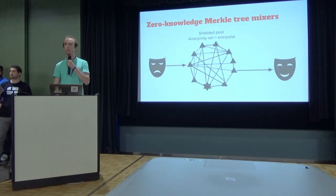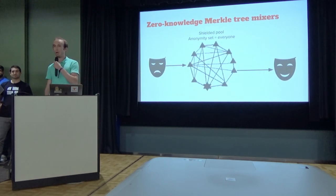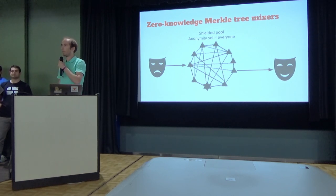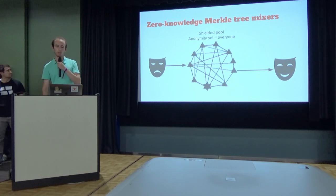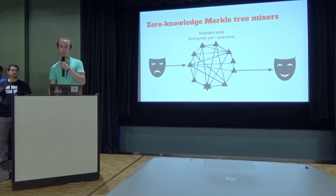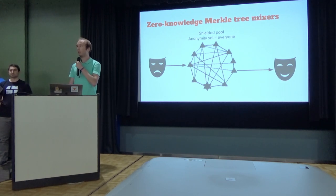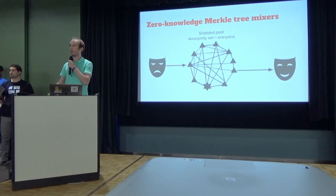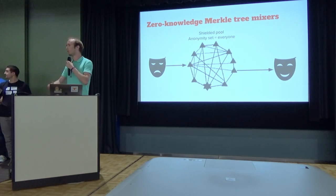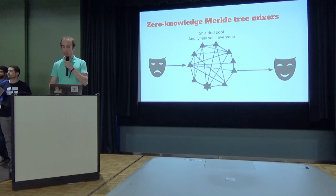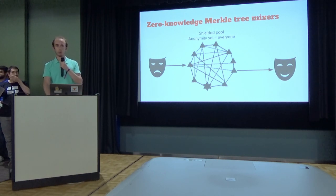By a process of elimination, we arrive at zero-knowledge Merkle tree-based mixers as the only way to achieve maximum anonymity. The idea is that there's a shielded pool that holds all the money participating in the anonymization, and no one knows who pays whom within the pool. You deposit into the pool, wait for a while, and then withdraw. That is the most private way of anonymizing your coins.